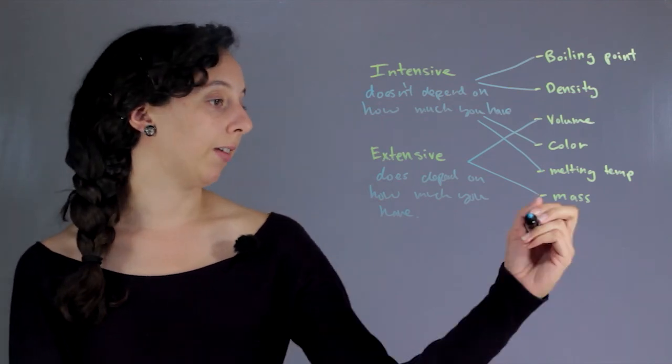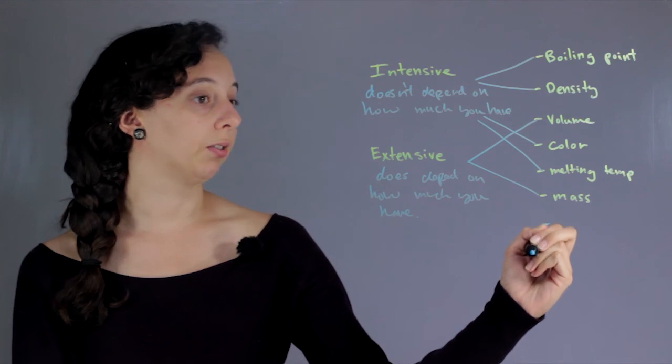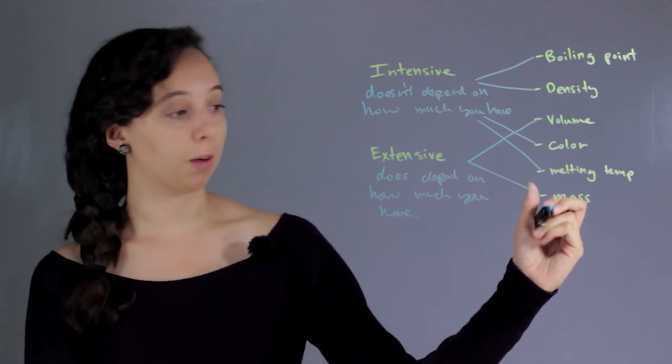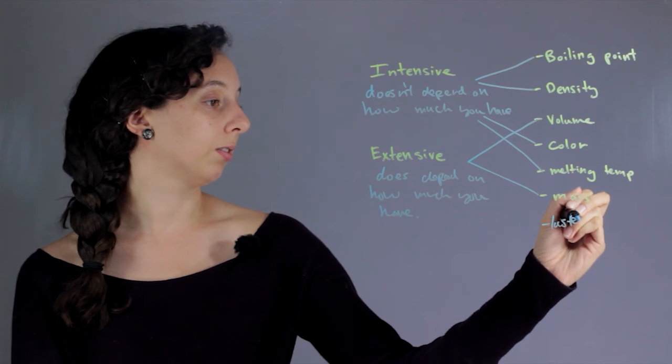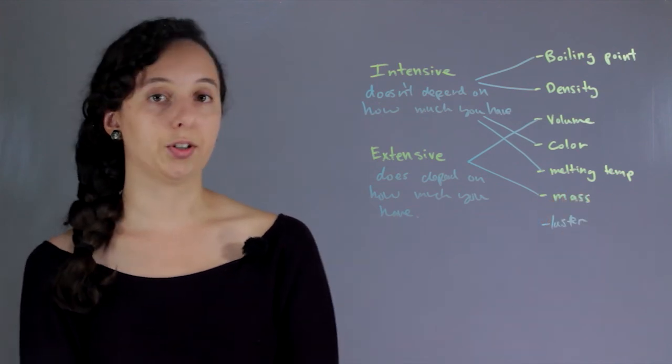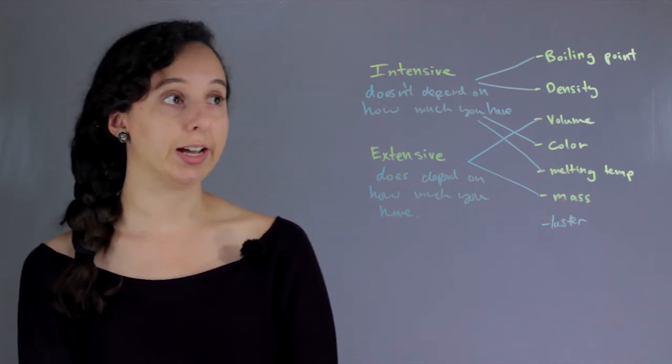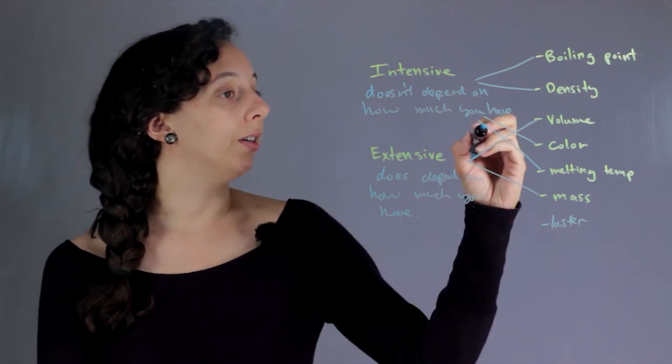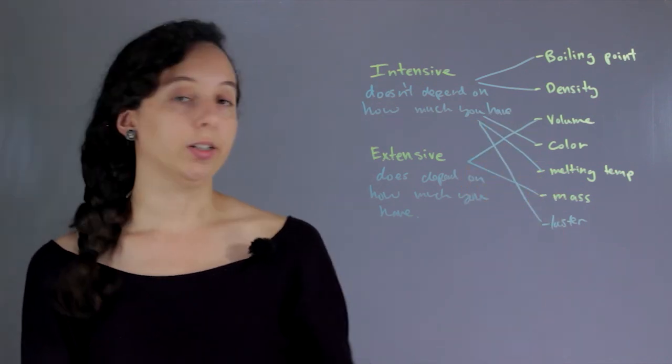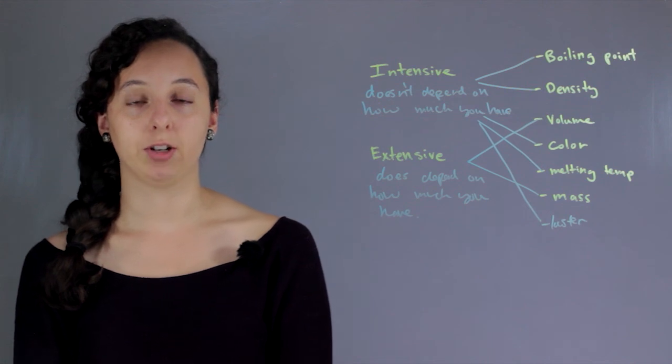And my favorite intensive or extensive physical property is luster, which is a technical science term. And luster basically means how shiny something is. And it's also an intensive property because it's going to be the same amount of shiny no matter how much you have.